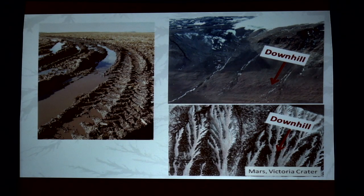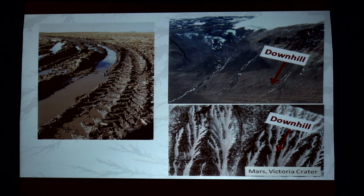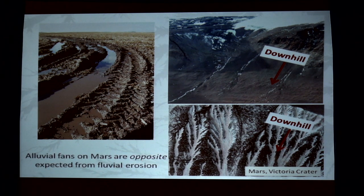There are other places where fluvial processes do not happen so clearly — especially on Mars when you look at craters. At the last Electric Conference we had a wonderful tour of the Mars geology. The big discrepancy is that alluvial fans actually go downhill — the wrong direction. This is the edge of the Victoria Crater. We would expect alluvial fans to increase as fluids run down to the bottom of the crater, but that does not happen. There must be another mechanism in place.